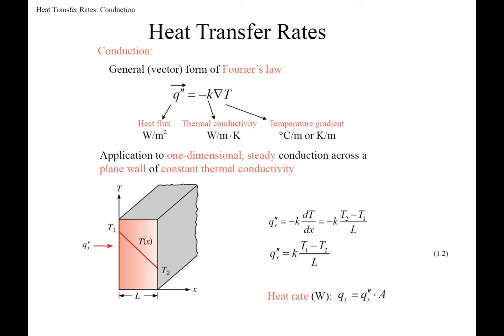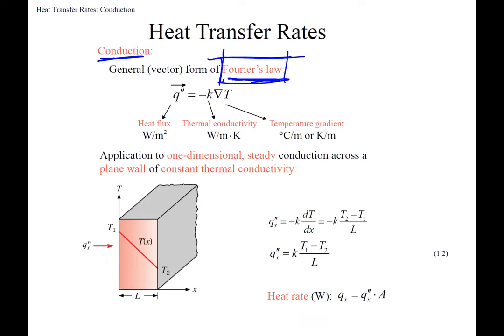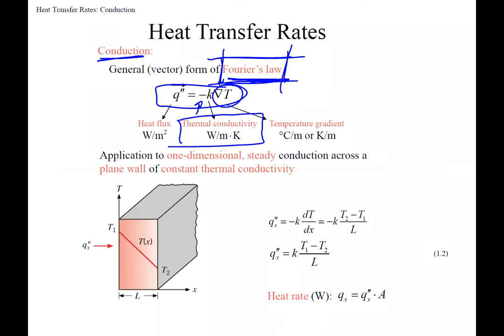For conduction we use Fourier's Law. In vector form, heat flux on the left equals negative thermal conductivity — a property of the material — times the temperature gradient. You can cancel units to verify the left side equals the right side.